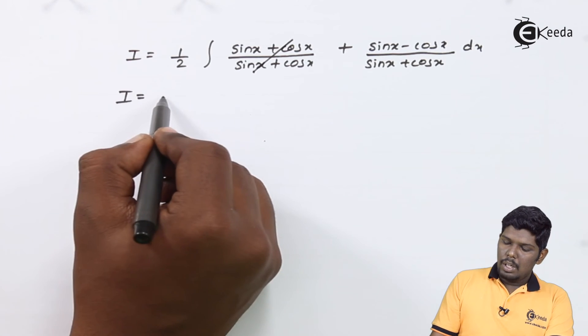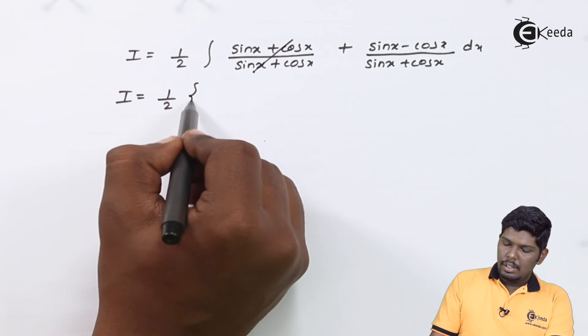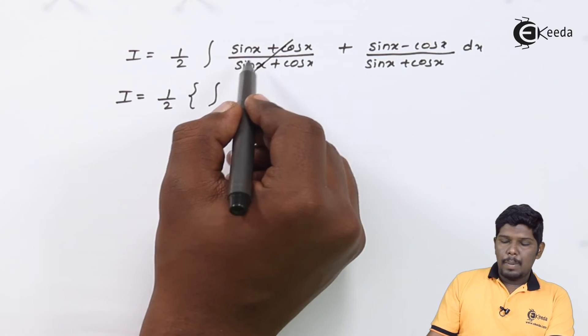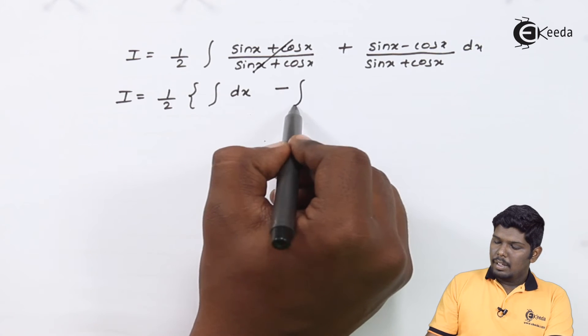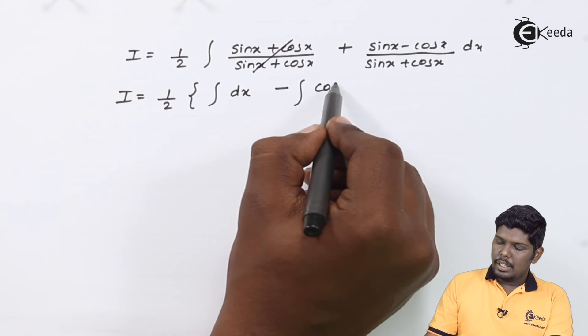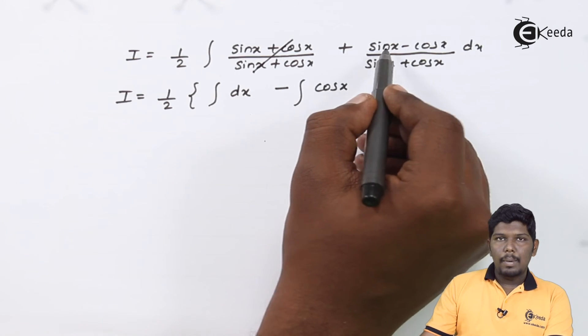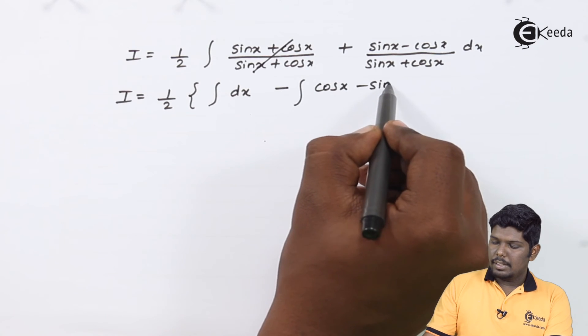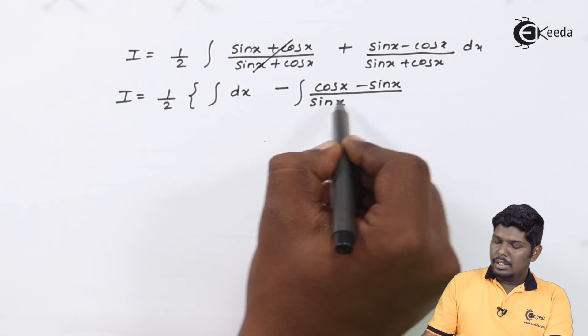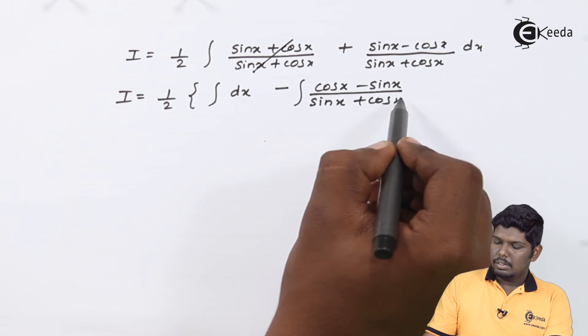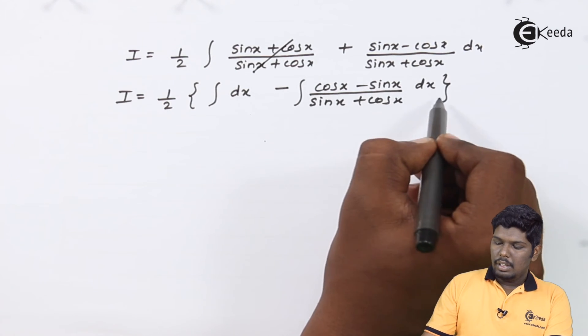This will give you half. In the first part, we have integral dx left. Taking minus 1 common, we have minus cos x will become plus cos x, plus sin x will become minus sin x, divided by sin x plus cos x dx.